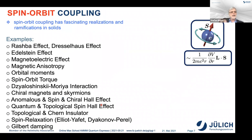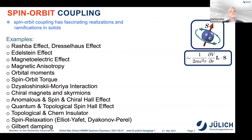This spin-orbit coupling, which you may never have heard of or been interested in, has fascinating realizations and ramifications in a solid — with fancy names attached: the Rashba effect, Dresselhaus effect, Edelstein effect, magneto-electric effect, magnetic anisotropy, orbital moments, spin-orbit torque, Dzyaloshinskii-Moriya interaction, chiral magnets and skyrmions, anomalous Hall effect, spin Hall effect, chiral Hall effect, quantum Hall effect, topological spin Hall effect, topological and Chern insulators, spin relaxation mechanisms like Elliott-Yafet and Dyakonov-Perel, and Gilbert damping. There is an entire zoo of phenomena that hinge on the spin-orbit interaction.